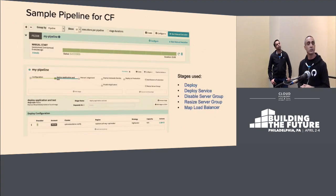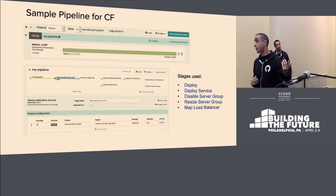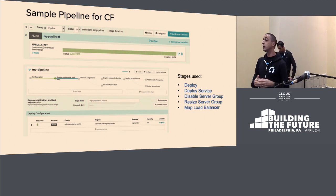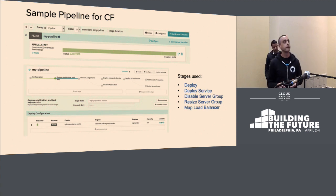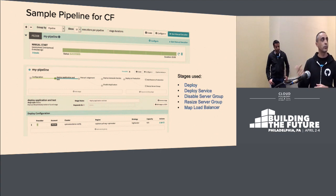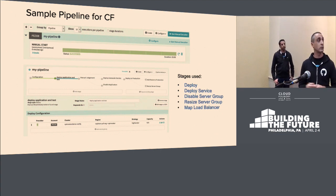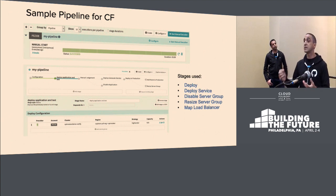Here's a sample pipeline showing some stages that map to Cloud Foundry that you could use in a continuous delivery pipeline: deploy stage, deploy service, disable server group, resize server group, and map load balancer. These cover quite a few of the different stages that map to Cloud Foundry.